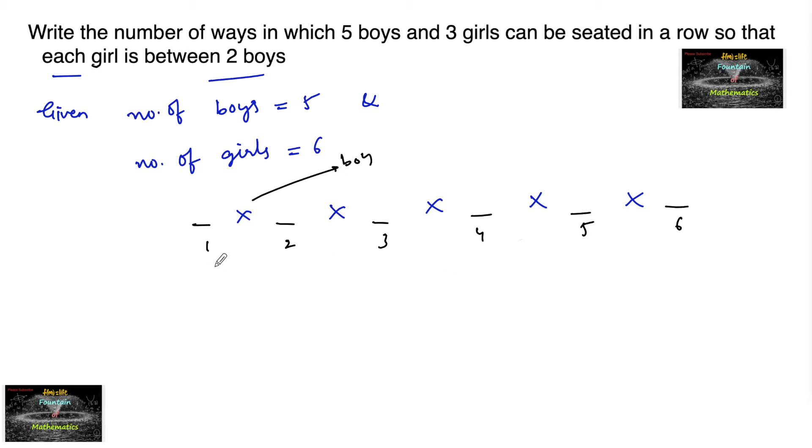Then in these 6 positions, the girls can be seated. But the condition is given: each girl is between 2 boys. This means between any 2 boys, a girl can be placed.